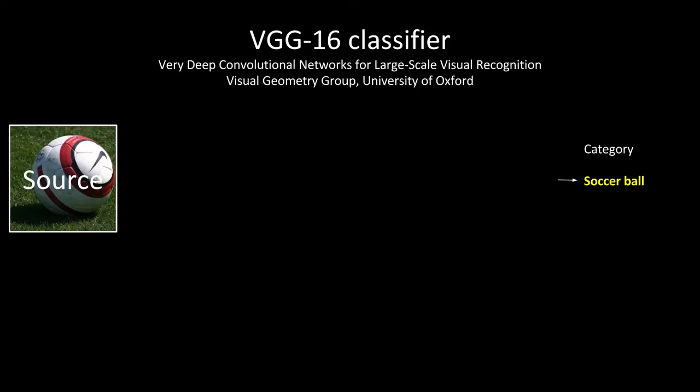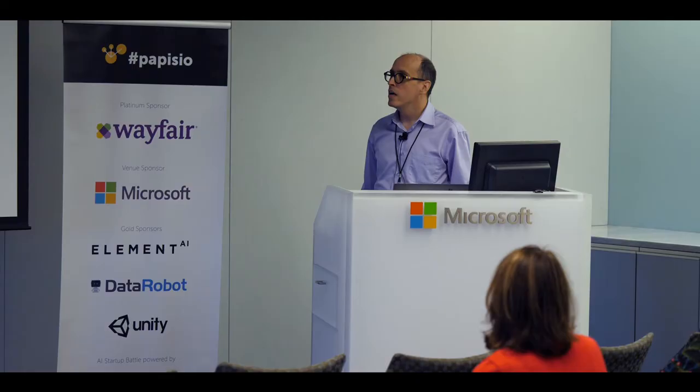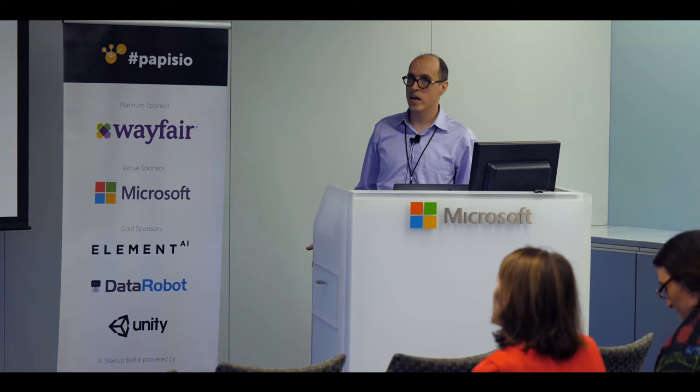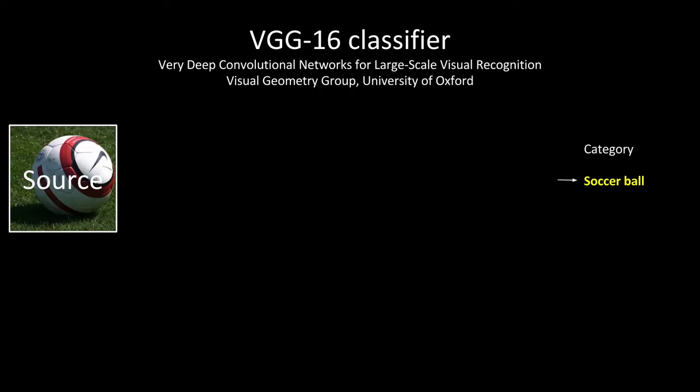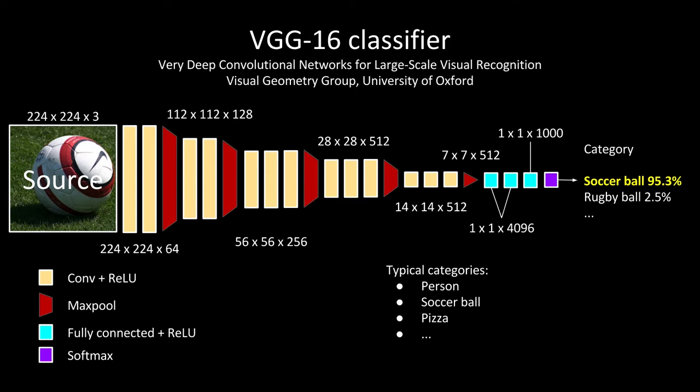Before we can discuss it in detail, we need a few background items that might not seem related, but are really the crux of how it works. The first thing we need to know is how VGG16 works. VGG16 is a classifier — it's able to take a source image and output a category: what is in the image? VGG16 was made for the ImageNet competition, where you have about a thousand categories — stuff like person, soccer ball, pizza, and so on.